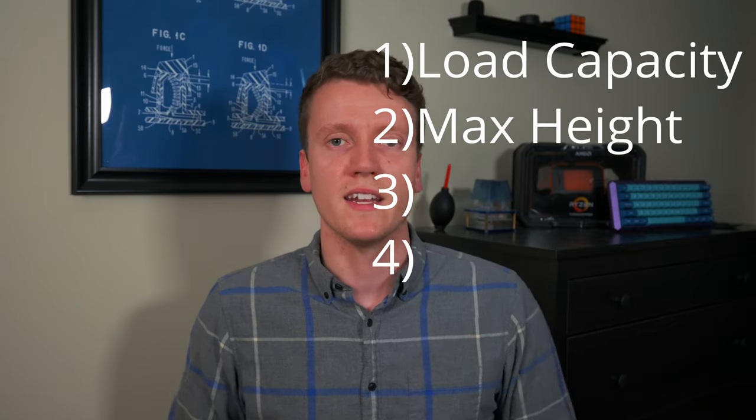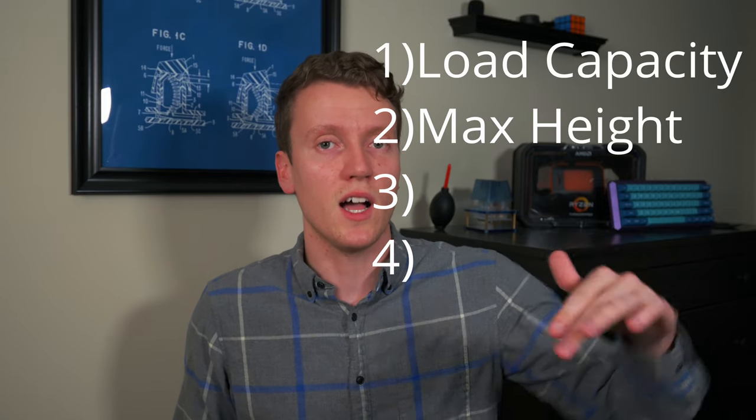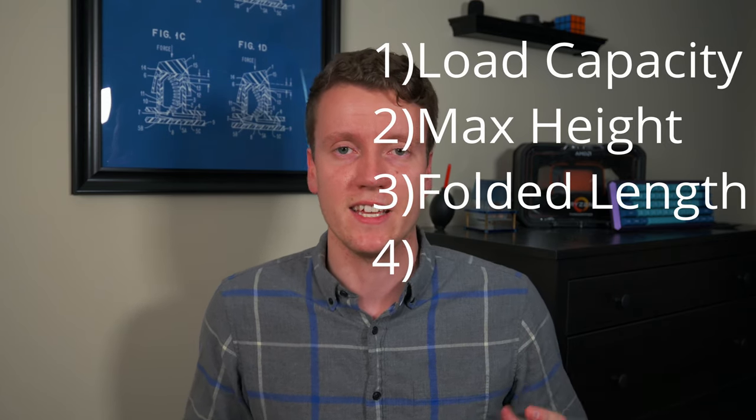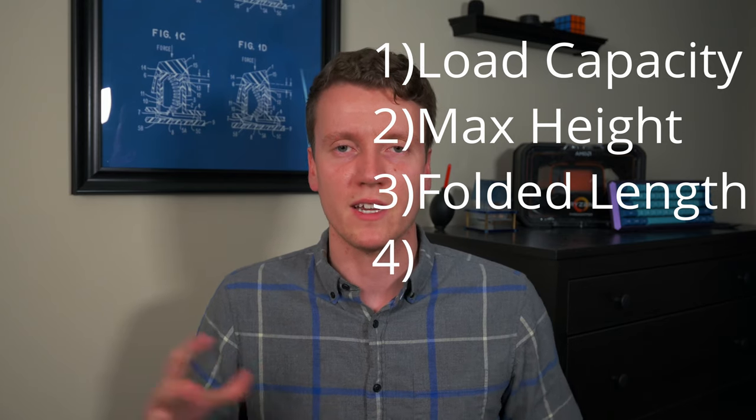Next, you have your maximum height. This is rated as with the middle column extended and with the middle column not extended. When you extend the middle column, it's going to be slightly less steady than without it extended, but it will still be fairly steady as a tripod. The folded length is more for traveling of how small and compact you can get the tripod for strapping it on a backpack, throwing it in some luggage for traveling. How much this spec means to you is dependent on how much traveling you're going to be using it. If you're only going to be using it indoor or in a studio setting, it's never going to be folded up and traveling, then it doesn't really matter for you.